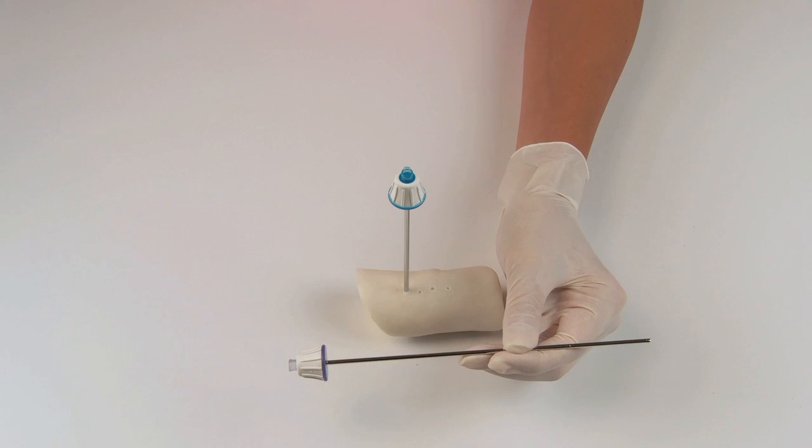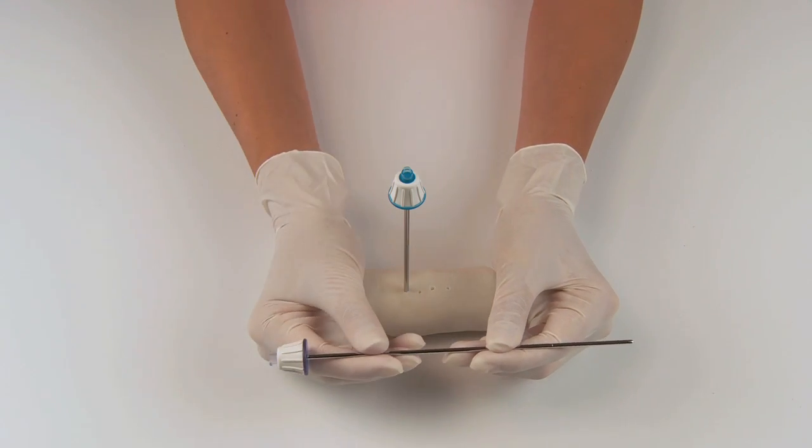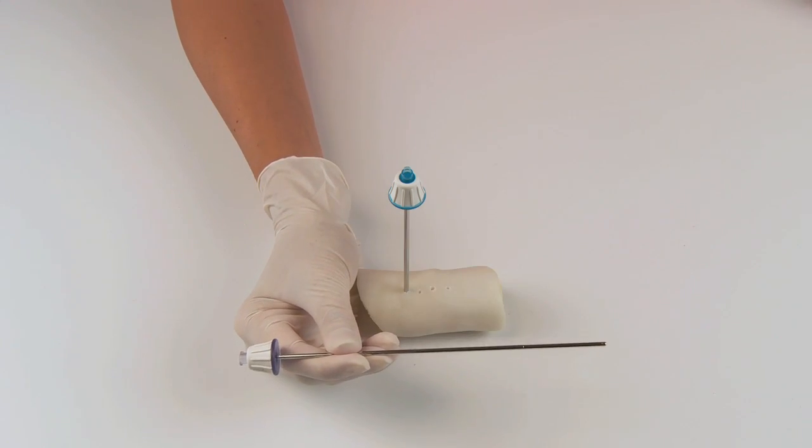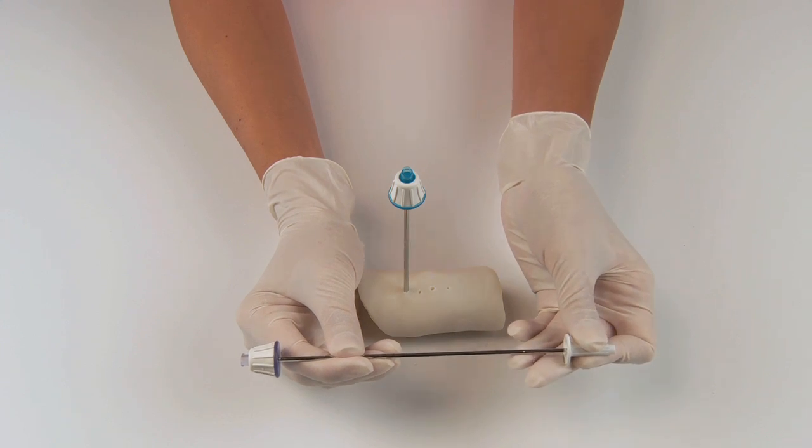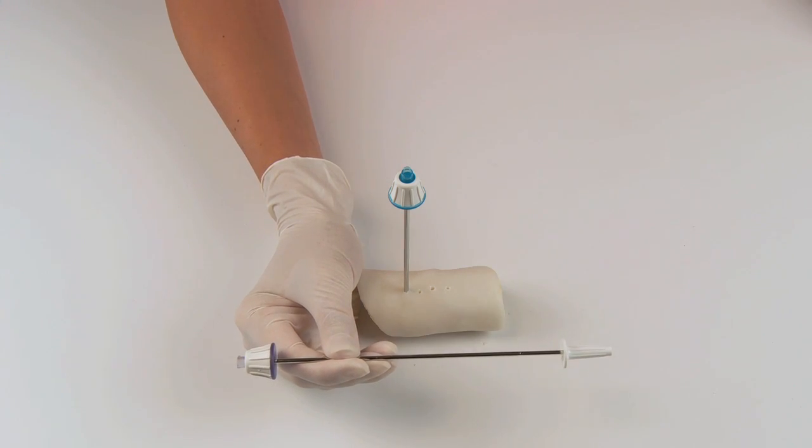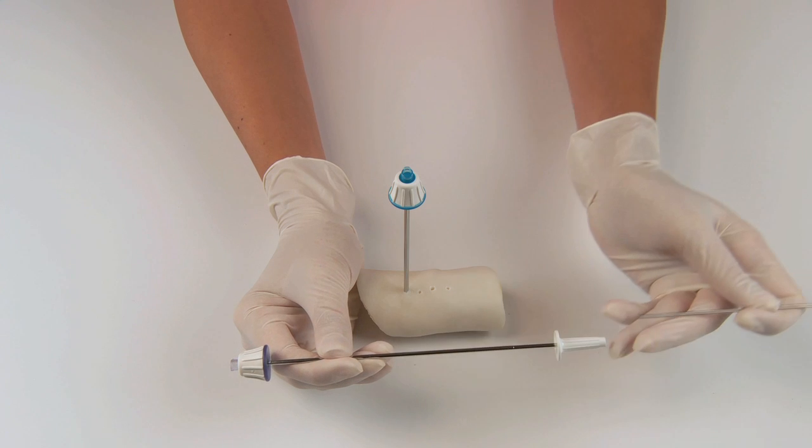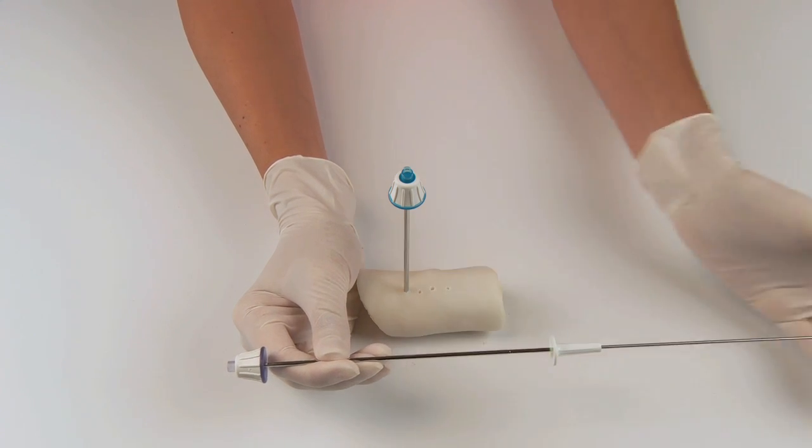Remove the core lock. In order to obtain the sample, place the sample ejector guide funnel on the distal tip of the biopsy cannula. Now insert the shepherd hook ejector pin and push the sample out.